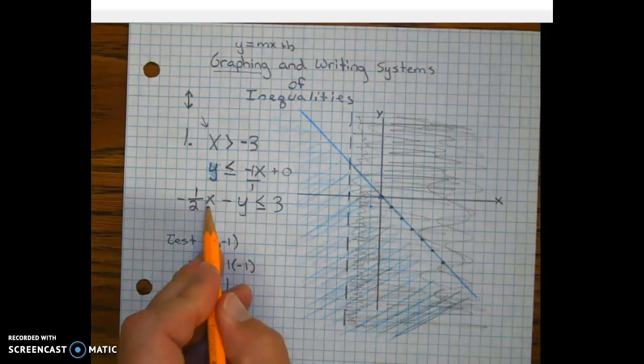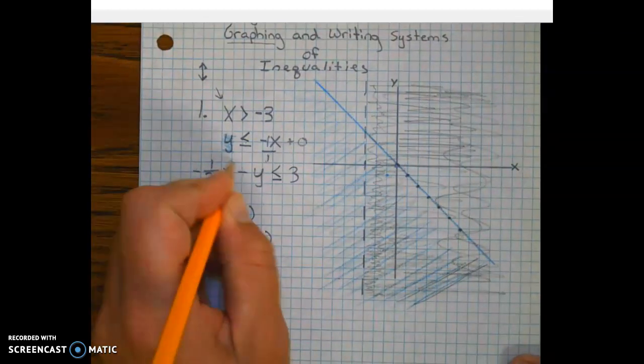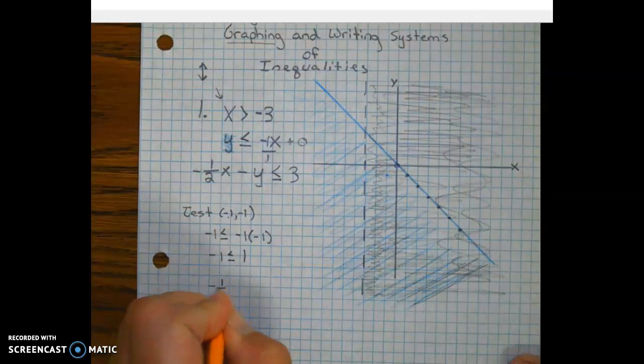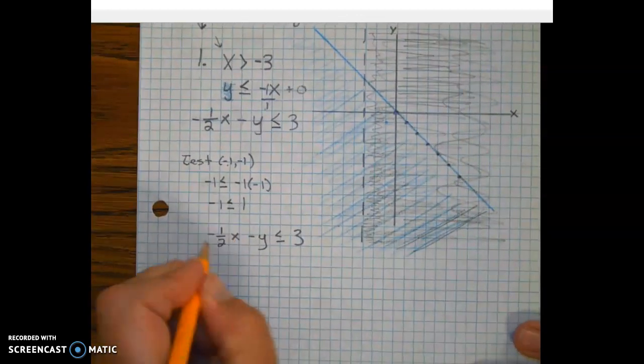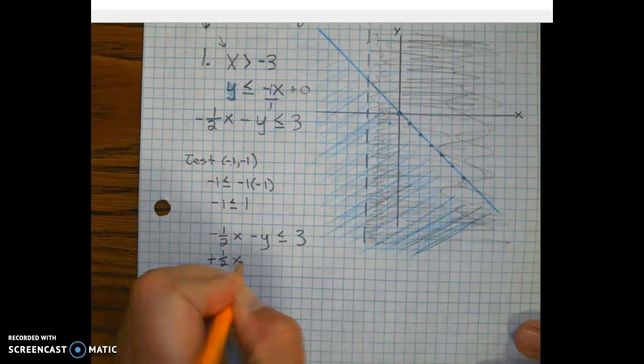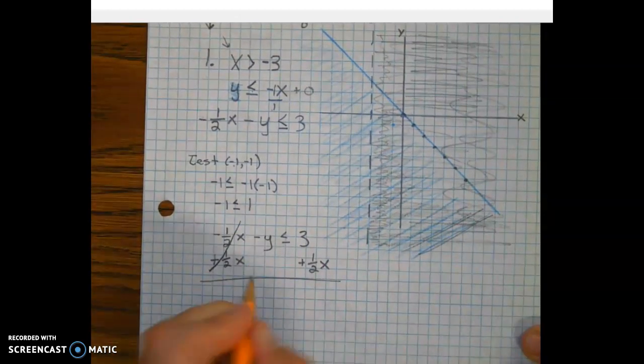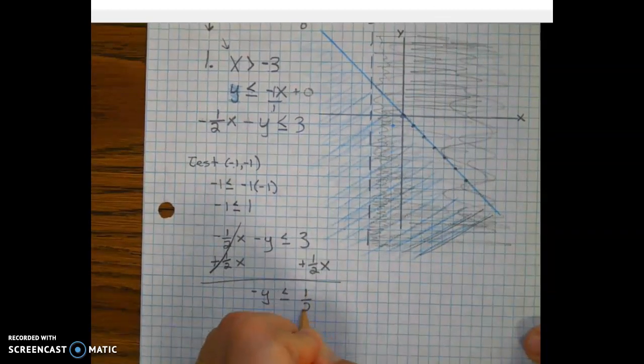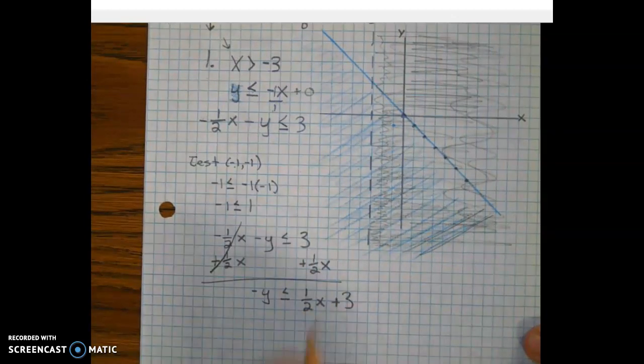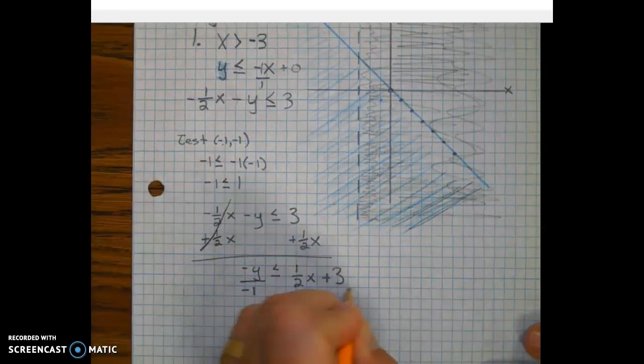This one's in standard form, which means we have to change it to slope-intercept form for easy graphing. We're going to start by moving this negative 1/2x over to the other side. This term is going to get canceled out. A minus is the same as a negative, so it's going to come down as negative y. Put your x term first because we're going to slope-intercept form, plus 3. Now we have to get rid of this negative, so we're going to divide everything by negative 1.